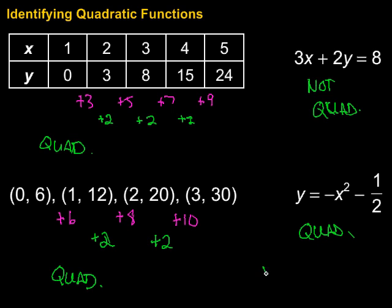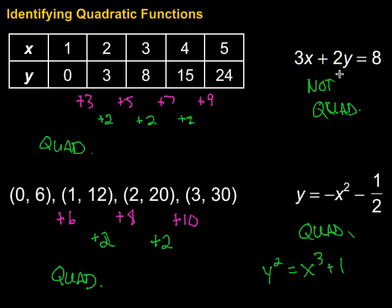Be on the lookout for things like this — that would be an example of something that is not quadratic because, first of all, the x isn't squared. The y is squared, but we've got a power larger than 2 here, so this is not an example of a quadratic. Also in this case, this is linear because each of the variables is just to the first power.